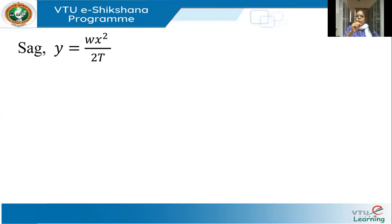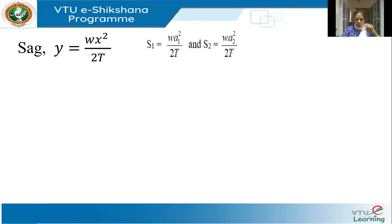X and Y are coordinates of some arbitrary point P at a vertical distance Y and horizontal distance X from O, the origin at maximum SAG. This derivation was done in session 4. Now for the first section, S1 is the vertical distance and A1 is the horizontal distance. Substituting into Y = WX²/2T, I get S1 = WA1²/2T and S2 = WA2²/2T. So I now have the SAGs in the two sections.